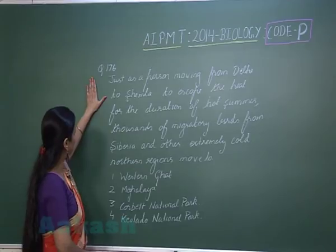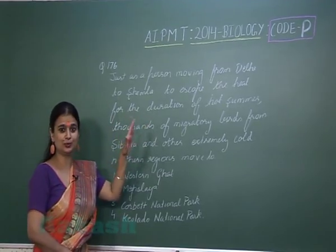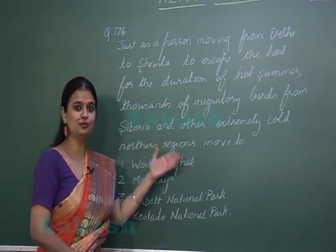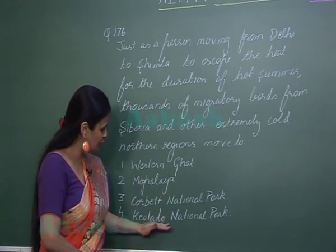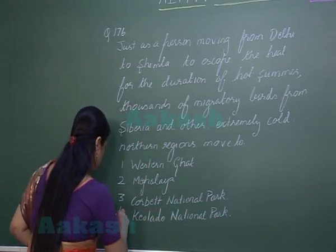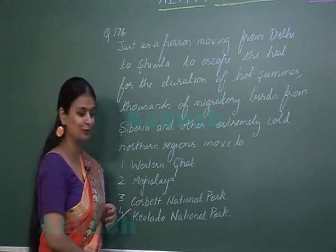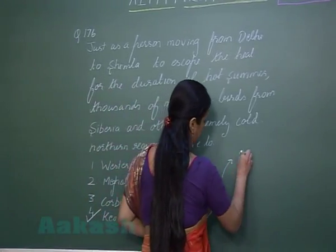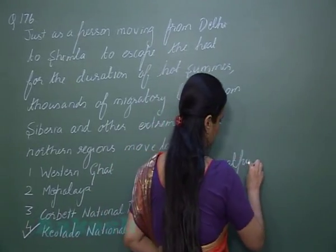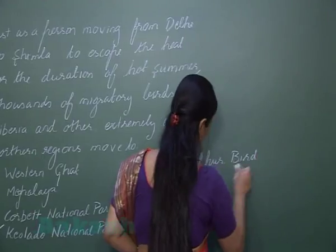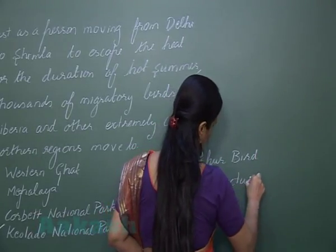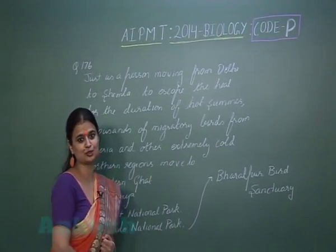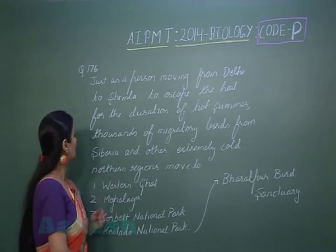Question number 176: Every year during the winter season, Siberian cranes from Siberia move into India at Keoladeo National Park. These migratory birds move into Keoladeo National Park during severe winters. Keoladeo National Park is also known as Bharatpur Bird Sanctuary. This is a type of migration shown by the Siberian birds.